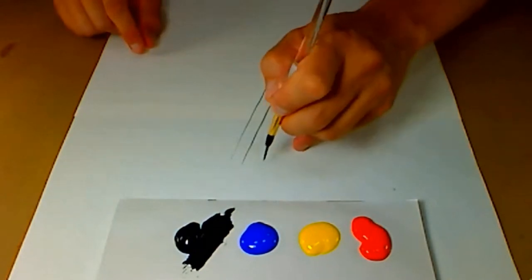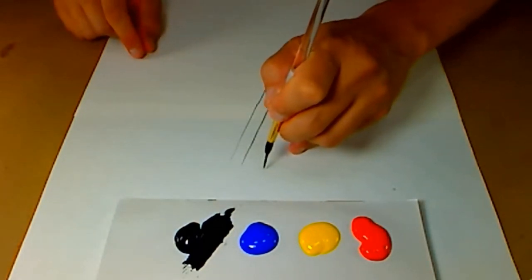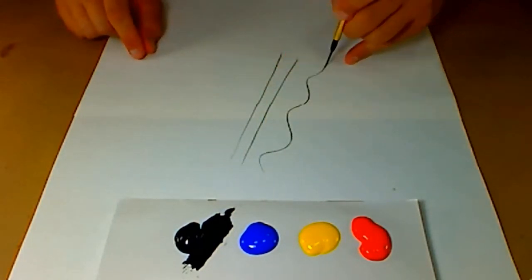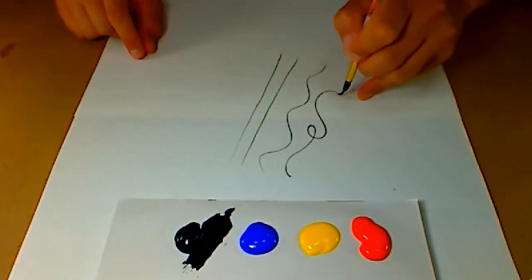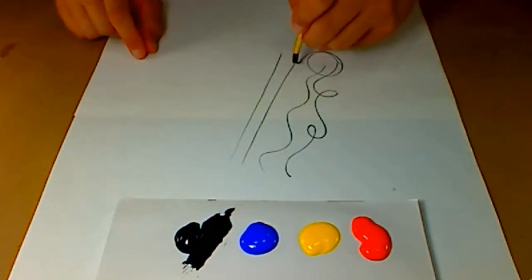Practice first doing straight lines. Try to keep the brush straight up and down. Practice doing wavy lines and then practice doing lines that have curly cues and swirls.